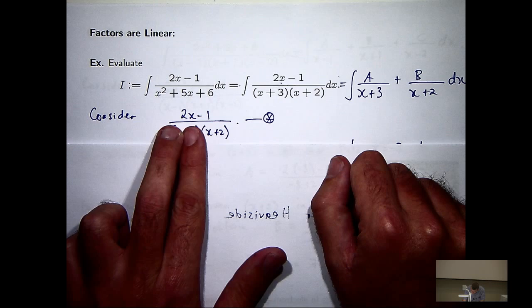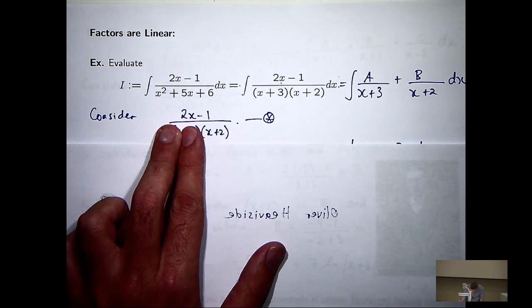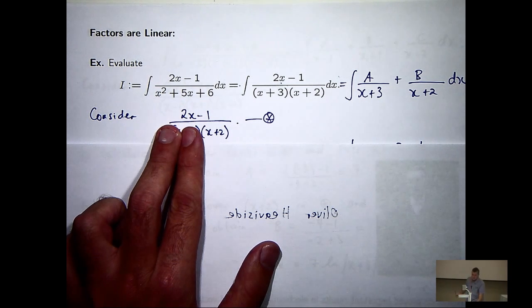So let's go to our integrand, cover up the bracket containing x plus 3, and substitute in x equals minus 3 to give me A.